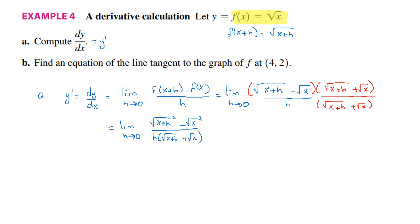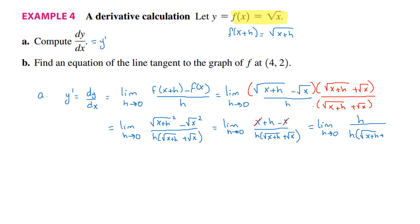The radical and the square cancel. We have the limit as h goes to 0 of x plus h minus x, divided by h times radical x plus h plus radical x. Then x and minus x cancel. We get the limit as h goes to 0 of h divided by h times radical x plus h plus radical x. Cancel the h, substitute h by 0, and the result is 1 over radical x plus radical x, which is 1 over 2 radical x. That's the derivative, f prime or y prime.